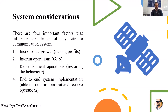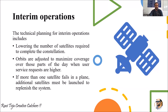The second factor is interim operations, which are much more advantageous for the global positioning system. The technical planning for interim operations includes lowering the number of satellites required to complete the constellation. As you install satellites nearer to the Earth, a huge number is required to cover the whole world, but installing a satellite at the GEO position can cover a maximum area with minimum satellites.